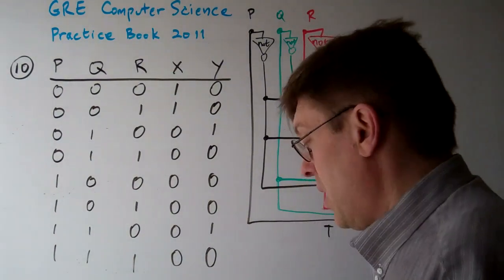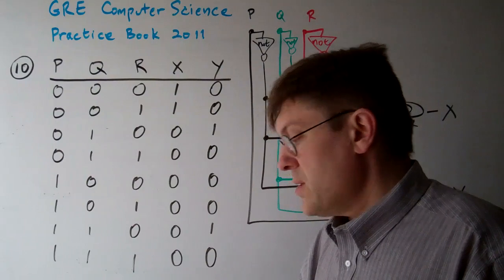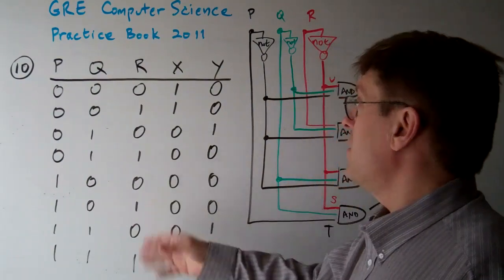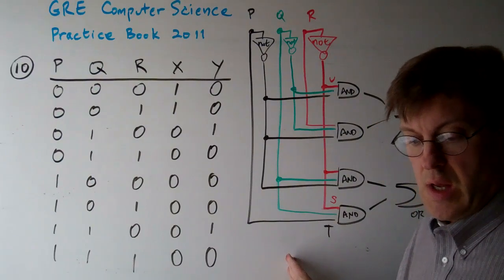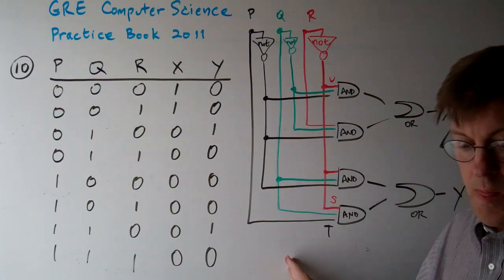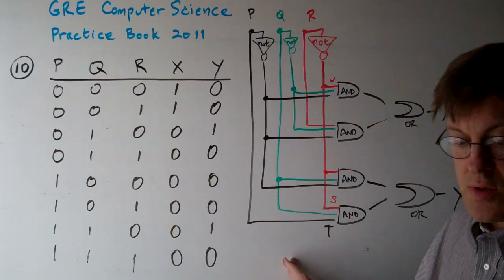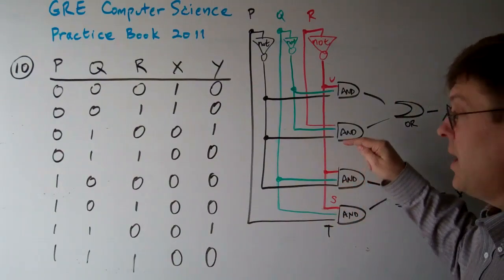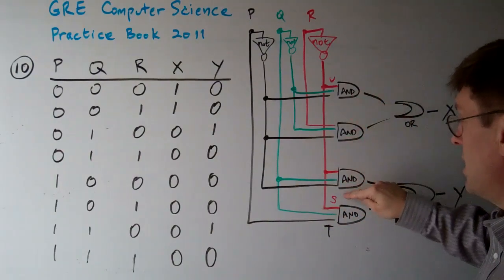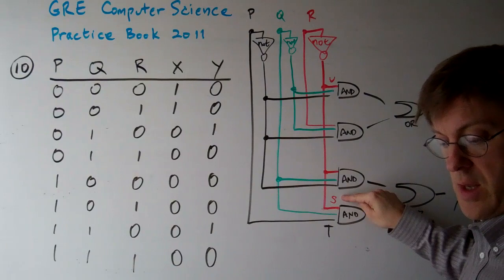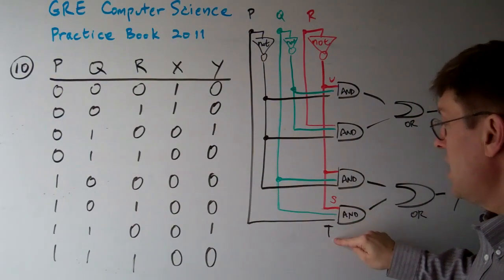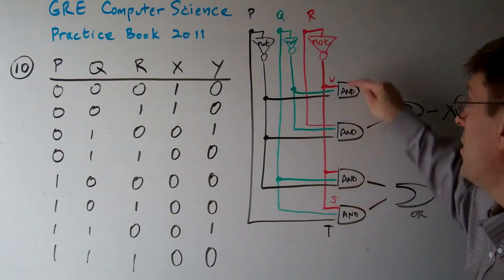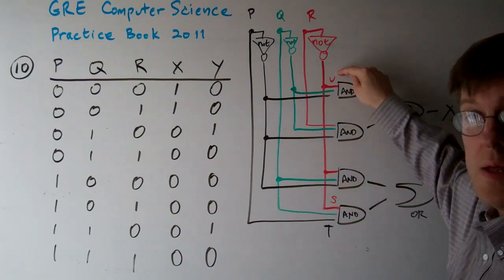Question 10. The question reads: consider the following truth table and implementation. This is the truth table, this is the implementation. Which of the following statements are true about the circuit shown? One, the line labeled S is correct. Two, the line labeled T is correct. And three, the line labeled U is correct.